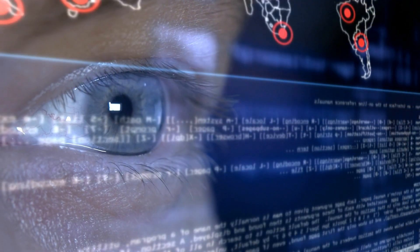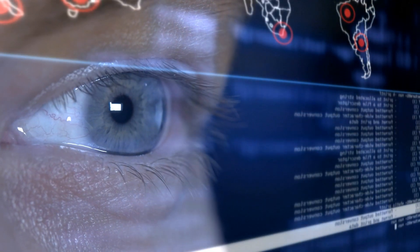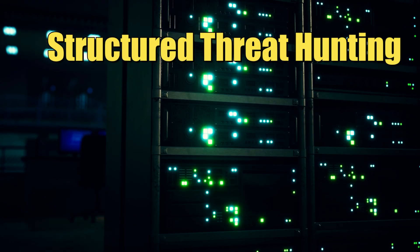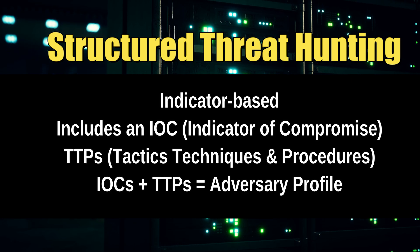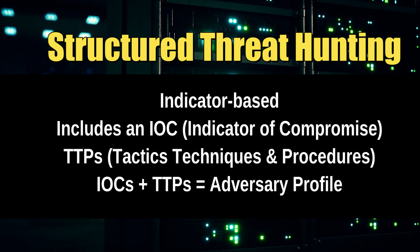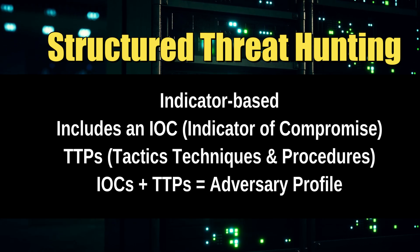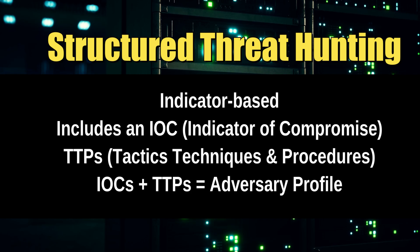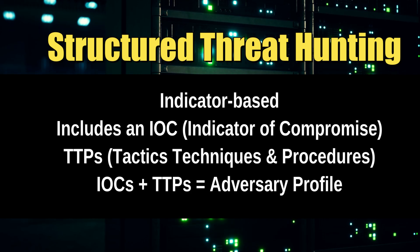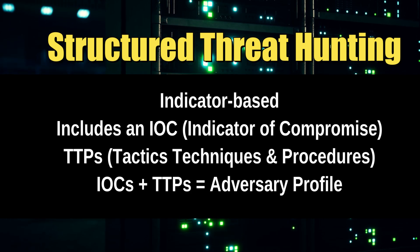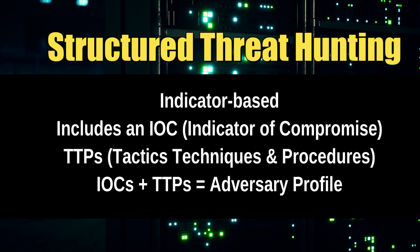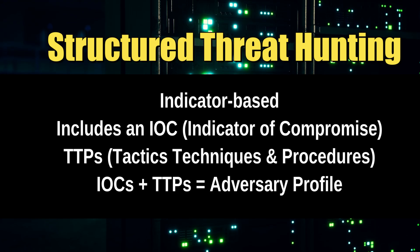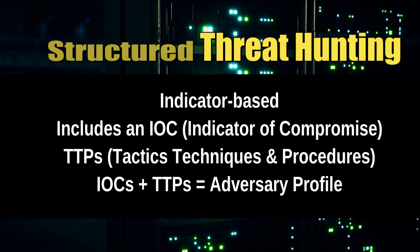There isn't just one way to threat hunt, and we'll go over three different ways to do so. First, there's structured threat hunting, or indicator-based threat hunting, which is the most common. This includes something like an IOC, or indicator of compromise, and TTPs — tactics, techniques, and procedures. When both IOCs and TTPs are combined, an adversary profile can be developed. This is more geared towards finding known threats.